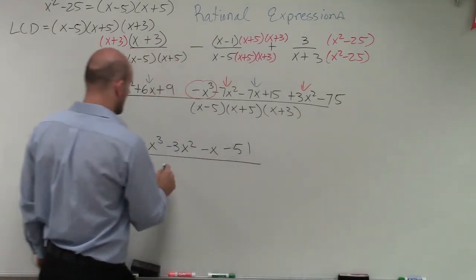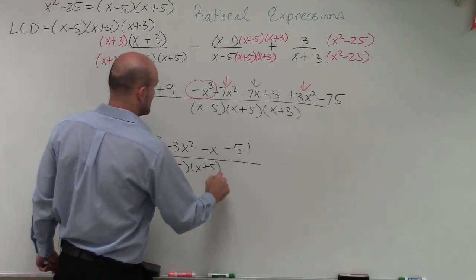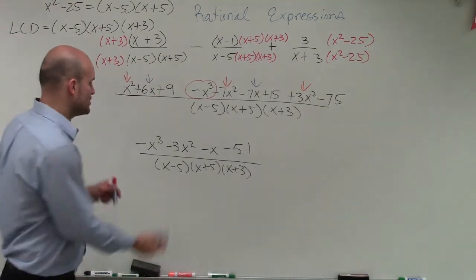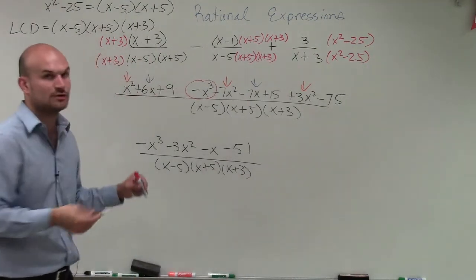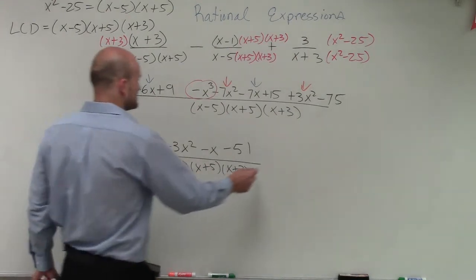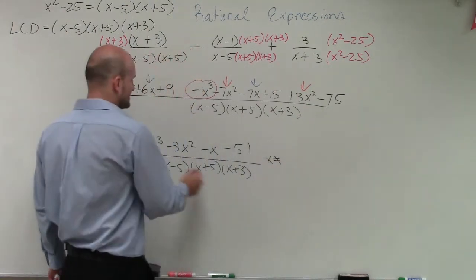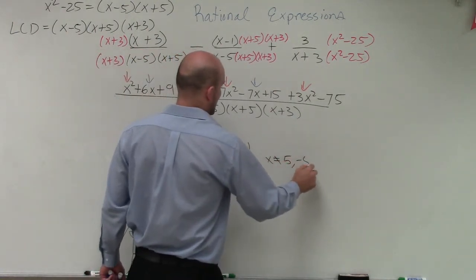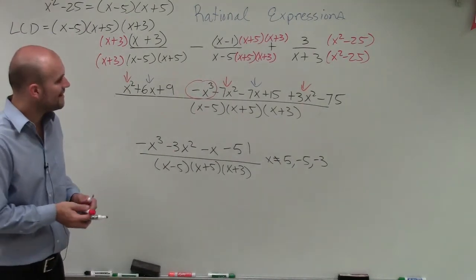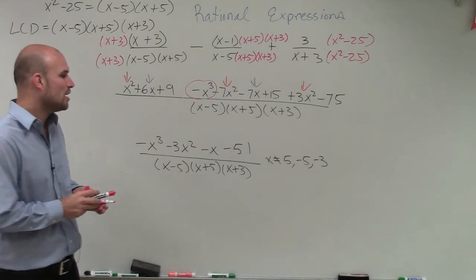That's all going to be over our LCD, which is x minus 5 times x plus 5 times x plus 3. Now, to determine our constraints, we take our denominator and set it equal to zero. Setting each factor equal to zero, you can see that x cannot equal 5, negative 5, and negative 3. So there you go — that is how you find the constraints, as well as add and subtract multiple rational expression terms.